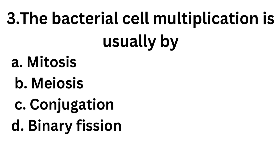Question number 3. The bacterial cell multiplication is usually by. Option A, mitosis. Option B, meiosis. Option C, conjugation. Option D, binary fission.